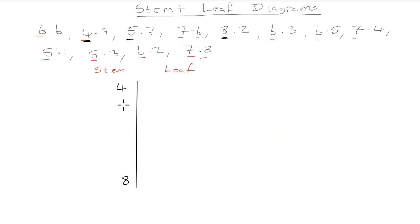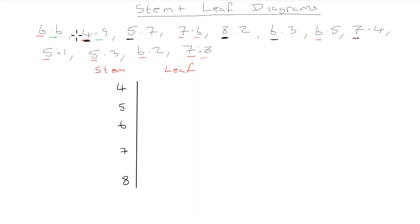So we fill out the stem part with 4, 5, 6, 7, and 8. Now for the leaf part we look at the decimal portion of each number. For the fours, we only have 4.9, so the four is in the stem and the nine goes in the leaf. We write nine on the right-hand side next to the four.